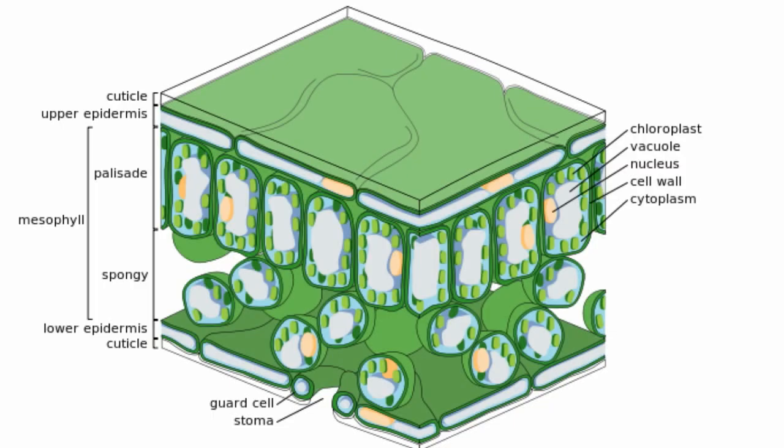If you look at a cross-section of a typical leaf, you will find some of the following. First, you will find a waxy waterproof coating that covers the leaf surface, called the cuticle. Underneath that, you will find surface cells.